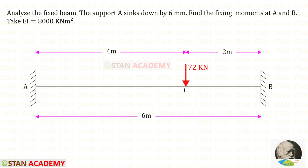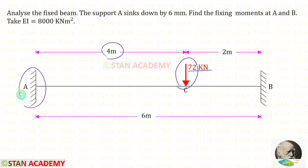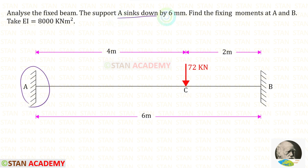Hello everyone. Today we are going to analyze this fixed beam. The span of the beam is given as 6 meters. In this beam there is a point load of 72 kilonewtons. It acts at a distance of 4 meters from the left support. The support A sinks by 6 millimeters. EI is given as 8000 kilonewton meter squared.